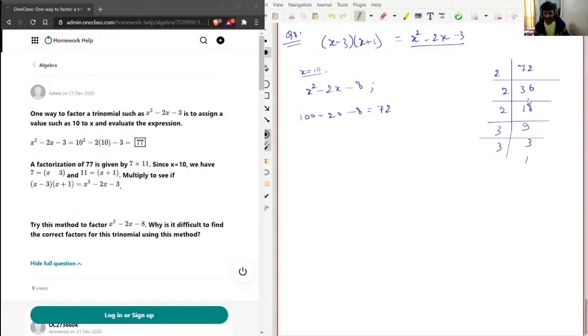So the factors for this - the possible combinations of factors will be 2 times 2 is 4, 4 times 3 is 12. So 2 times 36, then we have 4 times 18, then we have 6 times 9.